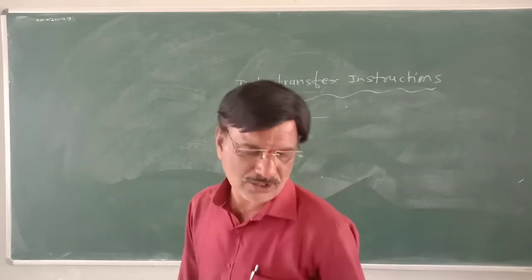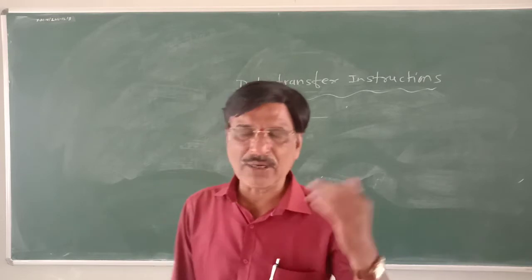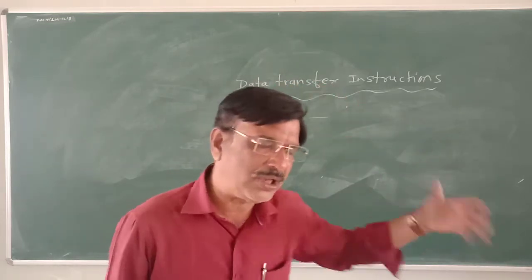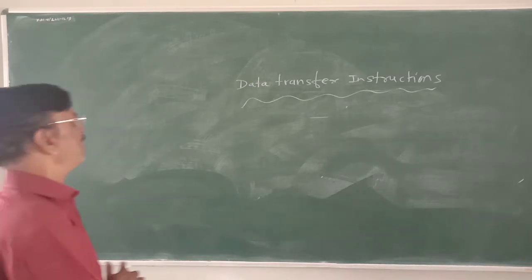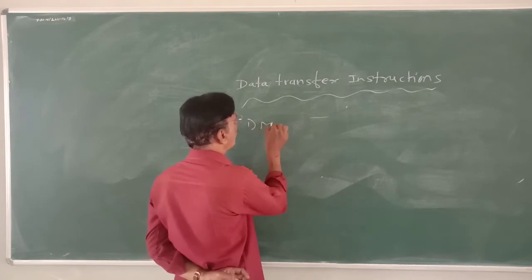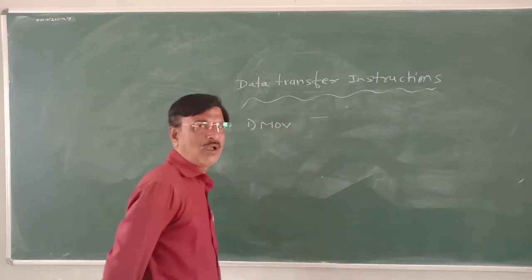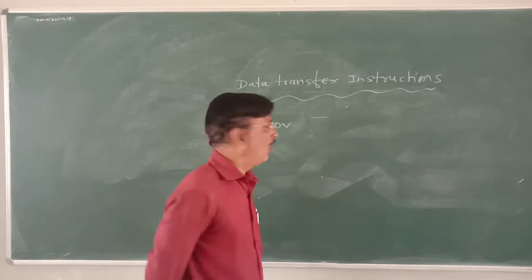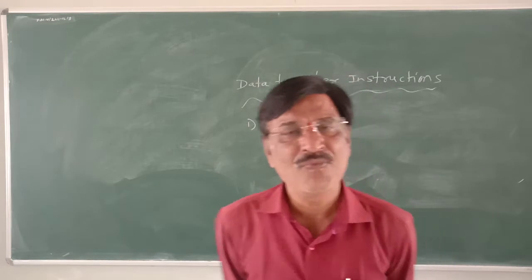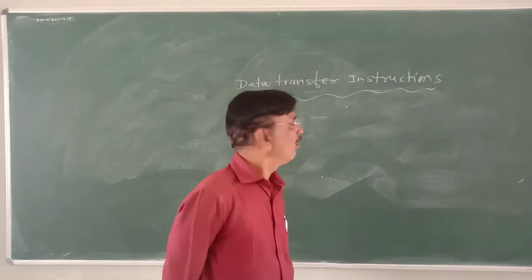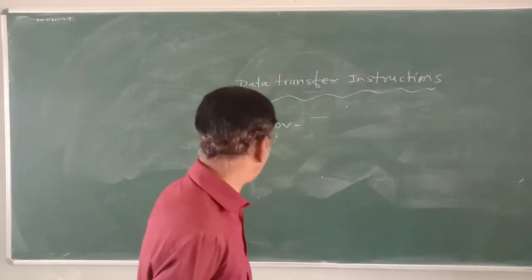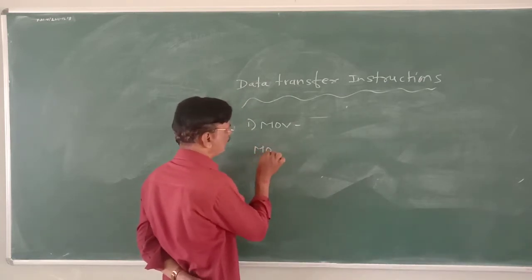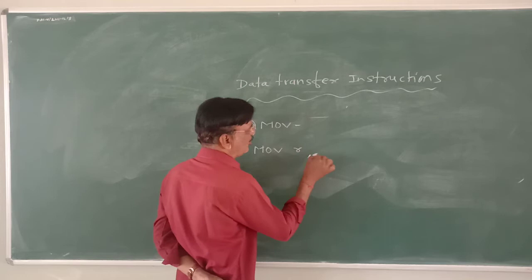A mnemonic is a short word used for our convenience to study all the instructions. Now, the first data transfer instruction is MOV — Move. When this instruction is executed, the microprocessor transfers data from register to register, or register to memory. MOV takes a destination register and a source register as operands.